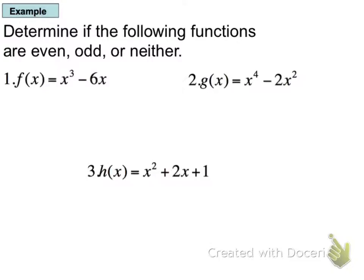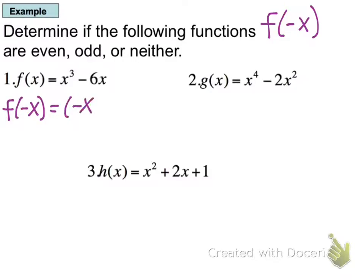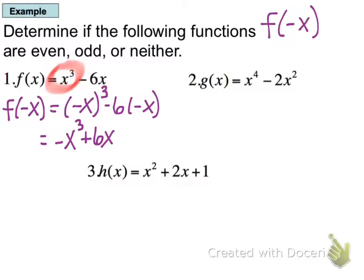Let's look at examples using equations, since that part is a little harder. To decide if a function is even or odd, find f of negative x first, then see what happens. In the first example, plugging in negative x and simplifying gives negative x cubed plus 6x. The original had positive x cubed and negative 6x, so all the signs flipped — this is an odd function.